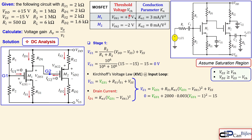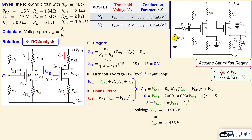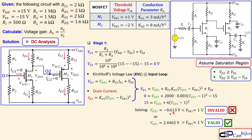Solving the quadratic gives two solutions: VGS1 = −0.613 V and VGS1 = 2.4465 V. To check validity, we require VGS1 ≥ Vth = 1 V for saturation. The first solution is less than the threshold voltage and is therefore invalid. The second solution, 2.4465 V, is larger than 1 V and is the valid solution. So VGS1 = 2.4465 V for stage one.